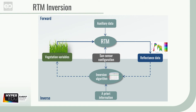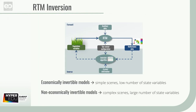Therefore, two types of models exist: economically invertible models designed for simple scenes with a low number of state variables — for example, ProSAIL, a combination of the PROSPECT and SAIL models introduced earlier — and non-economically invertible models designed for complex scenes with a large number of state variables.